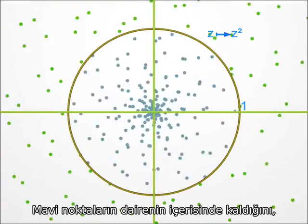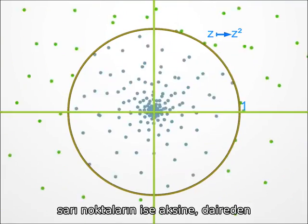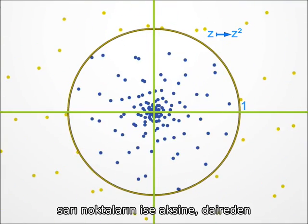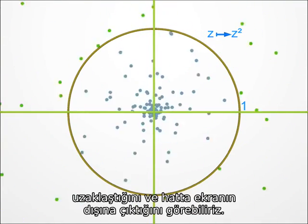You can see that the blue points stay inside the disc. And the yellow points, on the contrary, escape from the disc. And even escape from the screen.